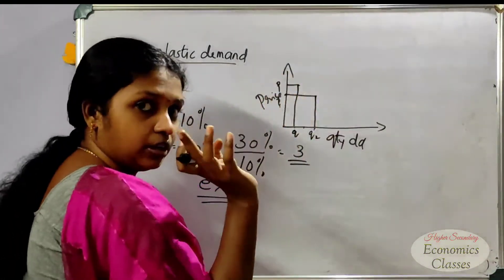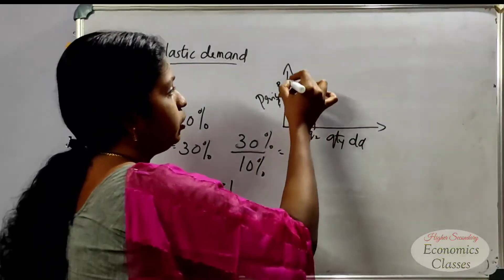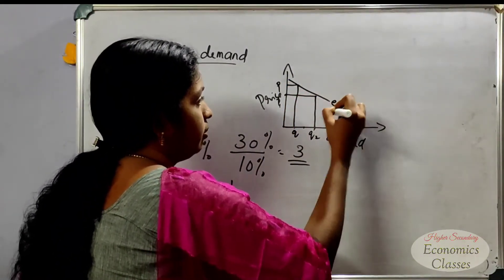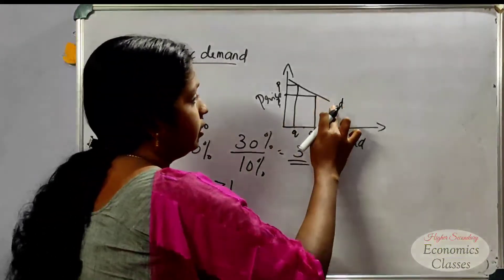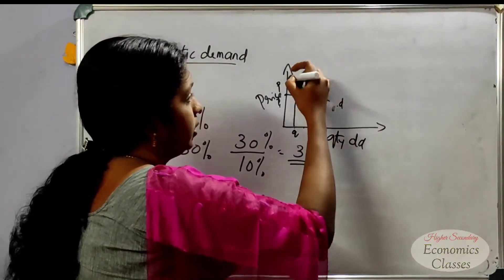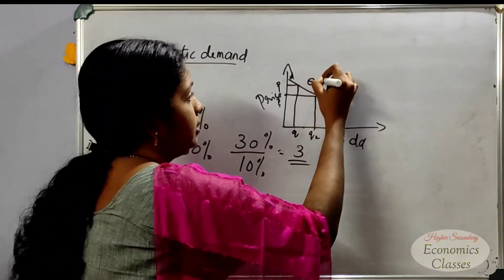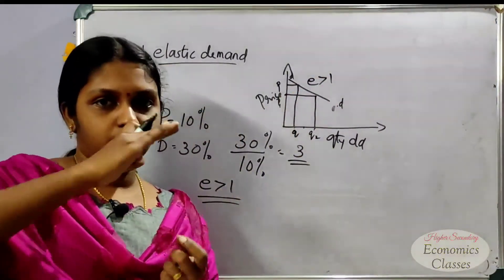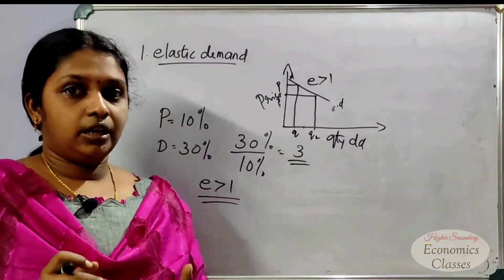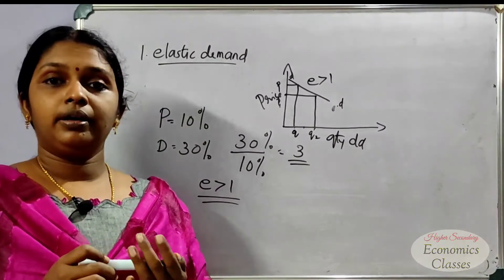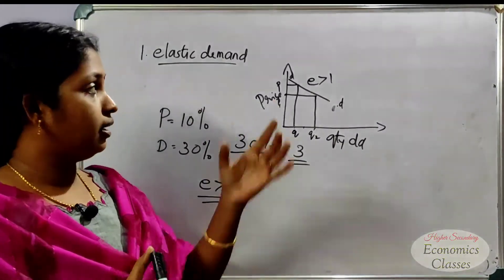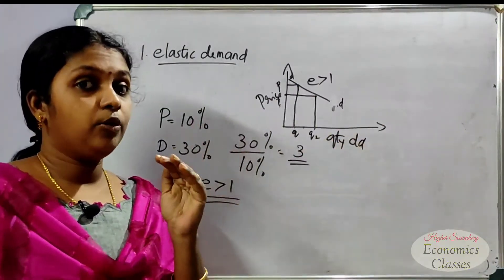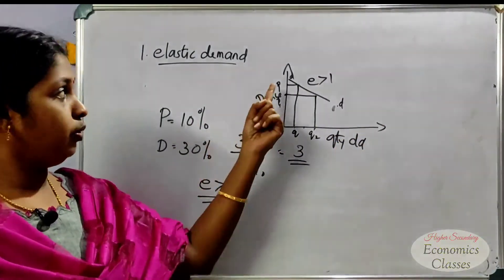On the demand curve diagram for elastic demand, DD is the demand curve. When elasticity is greater than 1, the curve is relatively flat. A small change in price leads to a larger change in quantity demanded.